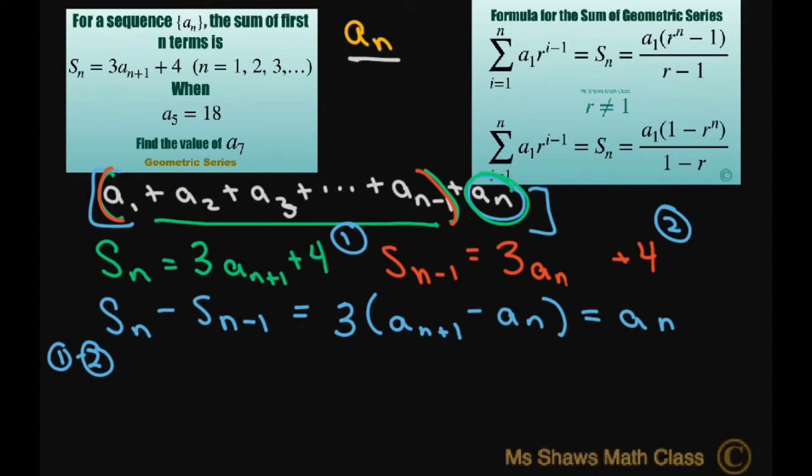Now let's solve for a sub n. So if you have a sub n equals 3 a sub n plus 1 minus 3 a sub n, then what I'm going to do is add this to both sides. So you get 4 times a sub n equals 3 a sub n plus 1.